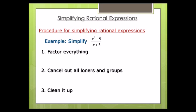Step number one says: factor everything. The way I'm going to treat this is as if the top is its own factoring problem and the bottom is its own factoring problem. You're going to find that simplifying rational expressions is really just factoring and crossing stuff out — it's 95% factoring and then a little bit at the end.